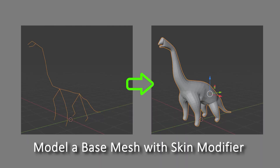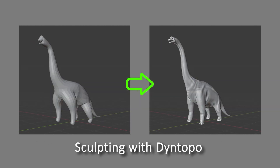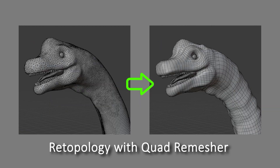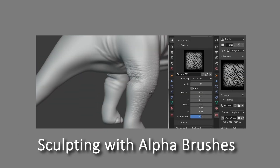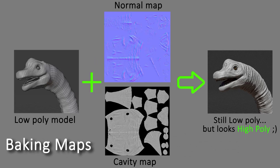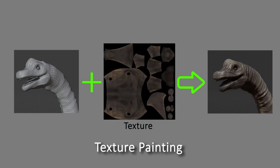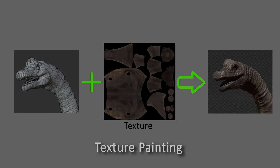The first step is to create a base mesh. We're going to use the skin modifier. Then we use Dynetopo to give it the basic shape. After that, we retopologize with quad remesher. Then we UV unwrap the mesh, sculpting details with multi-res. Then we sculpt with alpha brushes. And then we bake the maps. And finally, texture paint.